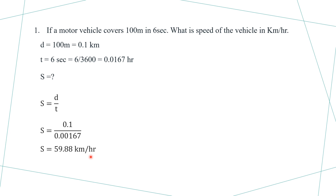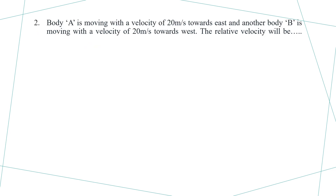So the speed of the motor vehicle was approximately 59.88 kilometers per hour. Moving to the second example: body A is moving with a velocity of 20 meters per second towards the east, and another body B is moving with a velocity of 20 meters per second towards the west.